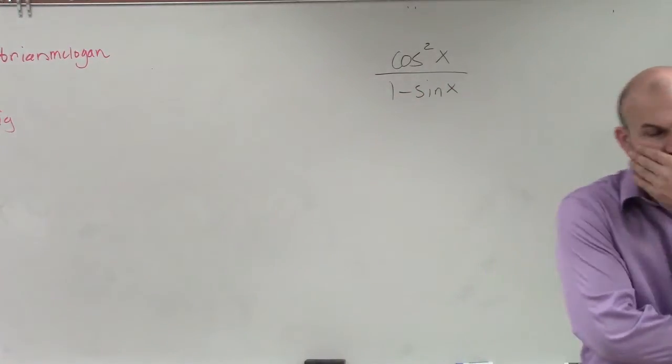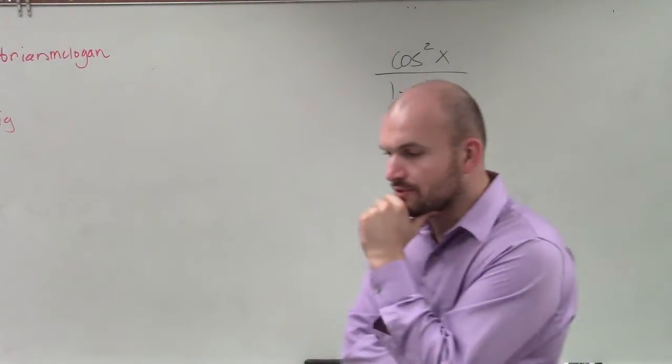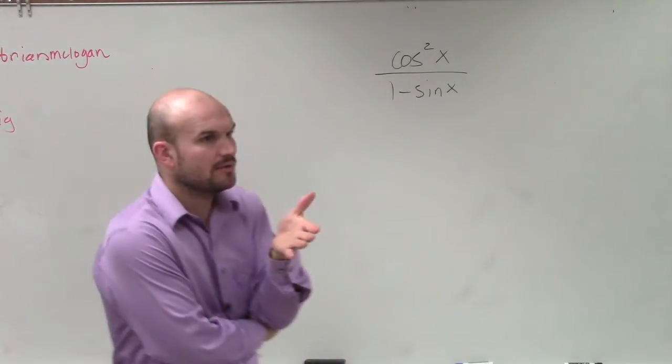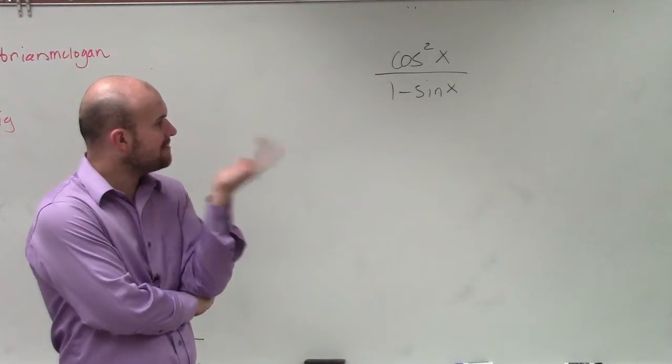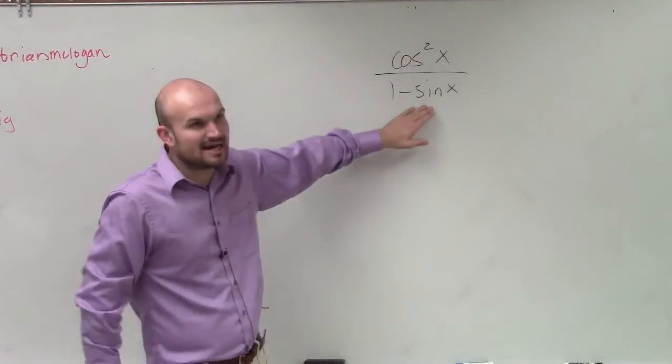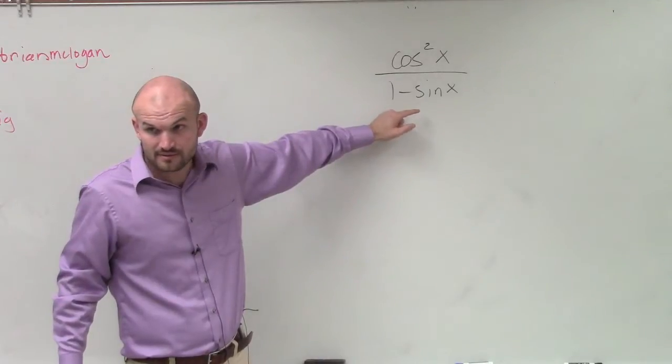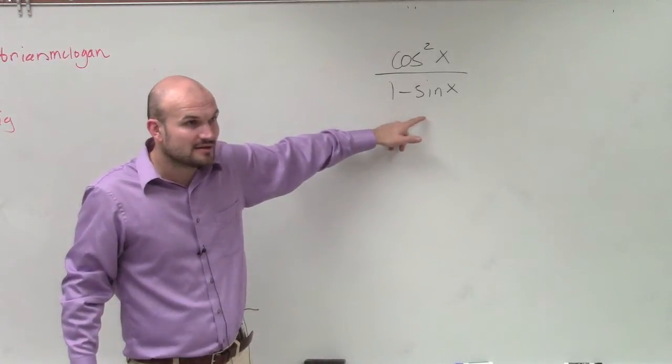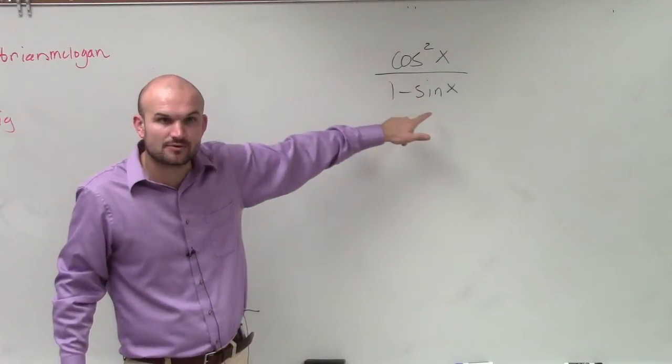So when I'm looking at this, what I'm going to want to do is think about, well, I need to be able to transform the 1 minus sine into 1 minus sine squared. And to do that, if this was 1 minus sine squared, I could do something with this, right? But it's 1 minus sine. So what would I have to do to get this to be 1 minus sine squared?